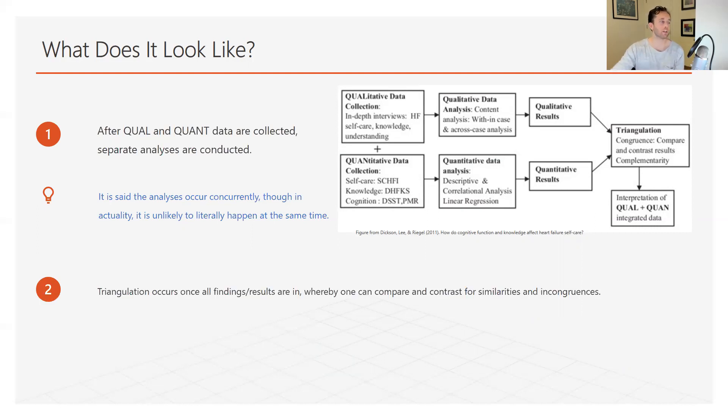Secondly, the triangulation that occurs, it occurs once all the findings or results are in. And so you can see right here where I'm circling, here is where you're going to look at any triangulation that may occur based upon these results that you have in both qualitative and quantitative domains. And you're going to be looking and comparing and contrasting, looking for similarities or instances of congruence, but also differences in instances of incongruence. What data is complementary in nature and what data kind of differentiates, and how are you going to address those issues? We're going to talk about that momentarily. And finally, in the interpretation phase is the very end. And again, it doesn't occur until all the results are in and the triangulation has already occurred.